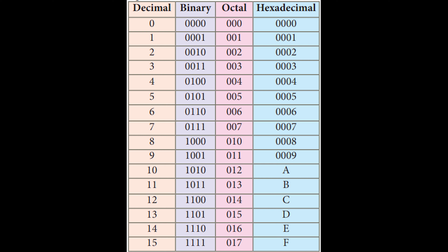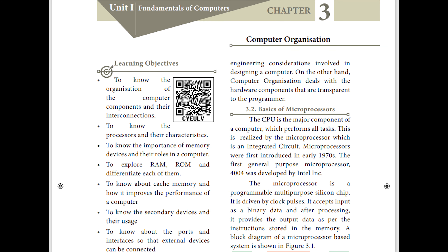The third chapter is about computer organization. In this chapter, you will be learning the things which are inside the processing units. Here we will see about microprocessor — an important question is there. Last year that portion was reduced, I'm not sure whether that portion will be included or reduced. In the third chapter, you will be learning about the characteristics of microprocessor — that is a very important question.